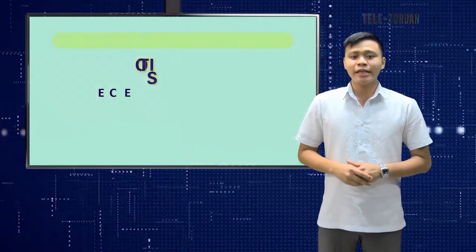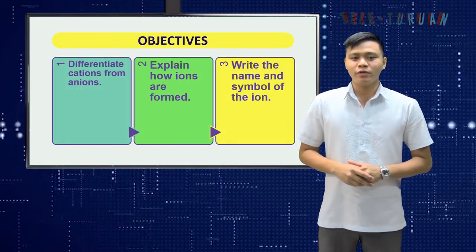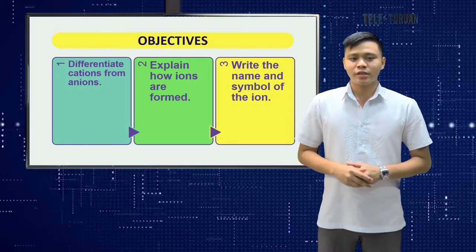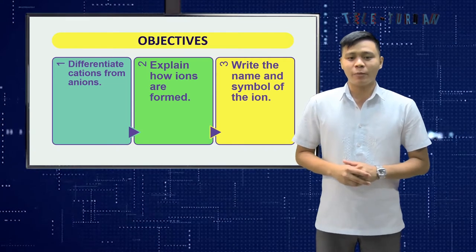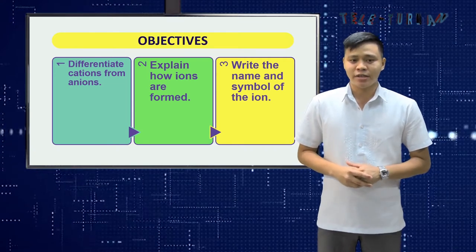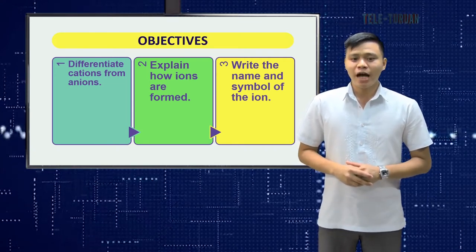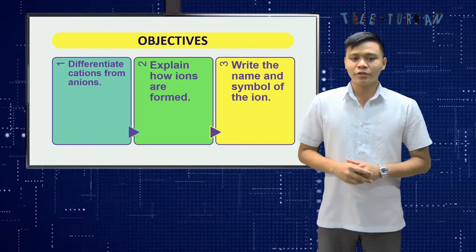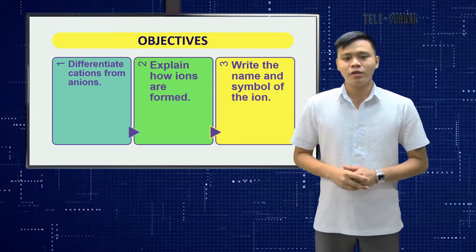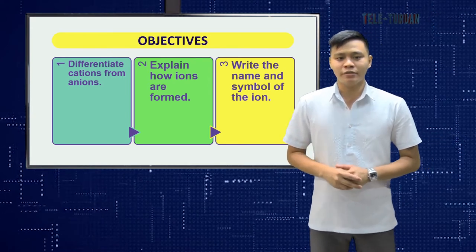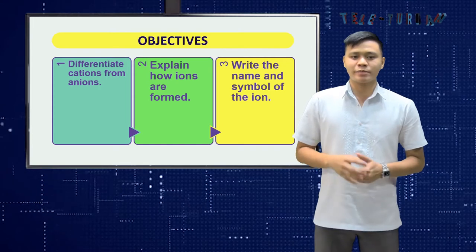At the end of the lesson, you are expected to be able to: first, differentiate cations from anions; second, explain how ions are formed; and third, write the name and symbol of the ion. And so let's begin.